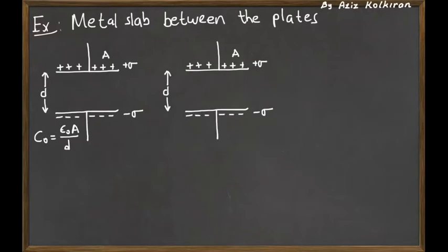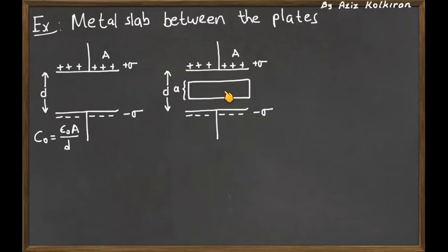The question is: what happens if we insert a metal slab of thickness A in between these two plates? As soon as we put the metal inside, because of the electric field between the plates, this metal slab will have induced charge densities on each face — one facing the upper plate and one facing the lower plate — and the charges will distribute themselves.